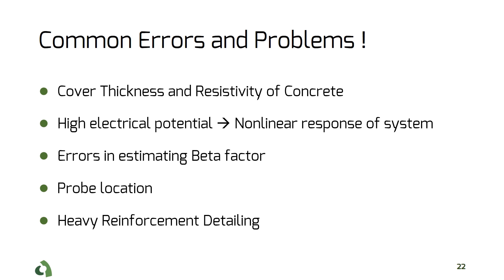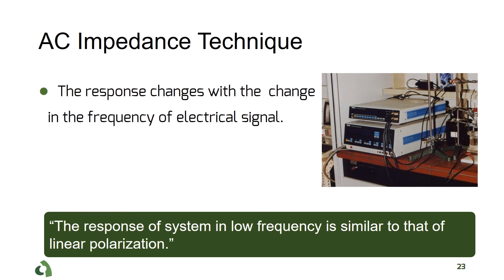The next technique is the AC impedance method, where an AC current is used to study the electrical response of a corroding bar in concrete. The AC impedance technique is a very powerful tool in corrosion study. A small AC potential is applied to the rebar, and the current response is analyzed, then the impedance of the system is determined.